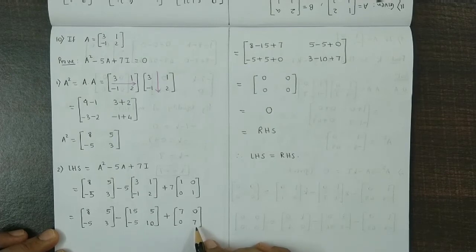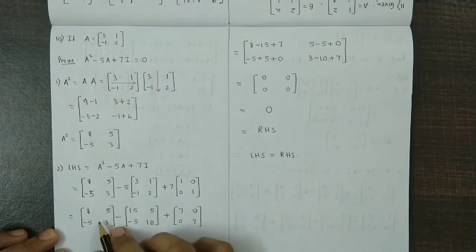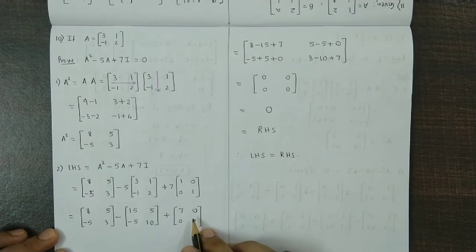Now we add and subtract the corresponding elements. We subtract the elements of the first two matrices and add the corresponding elements of the third matrix.